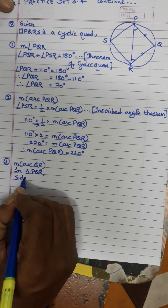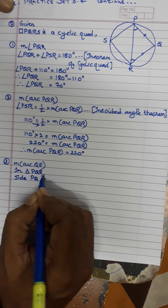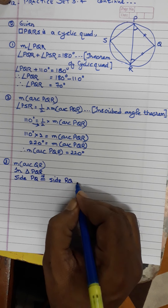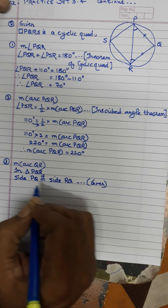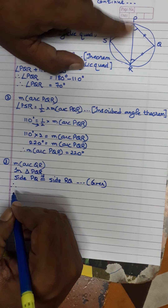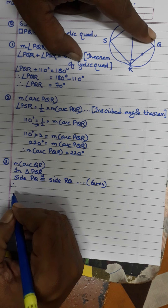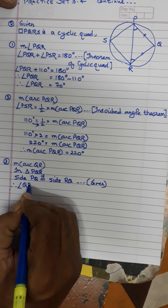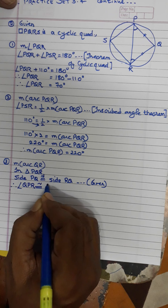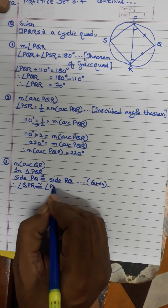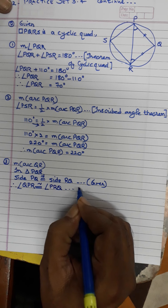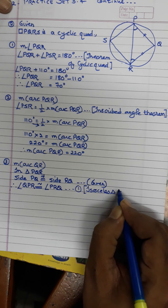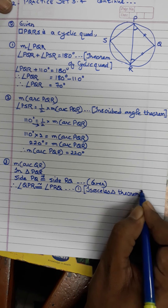In triangle PQR, side PQ is congruent to side RQ — given. Therefore, by the isosceles triangle theorem, since two sides are equal, the two base angles are also equal. So angle QPR is congruent to angle PRQ. We can call this equation number 1, reason: isosceles triangle theorem.